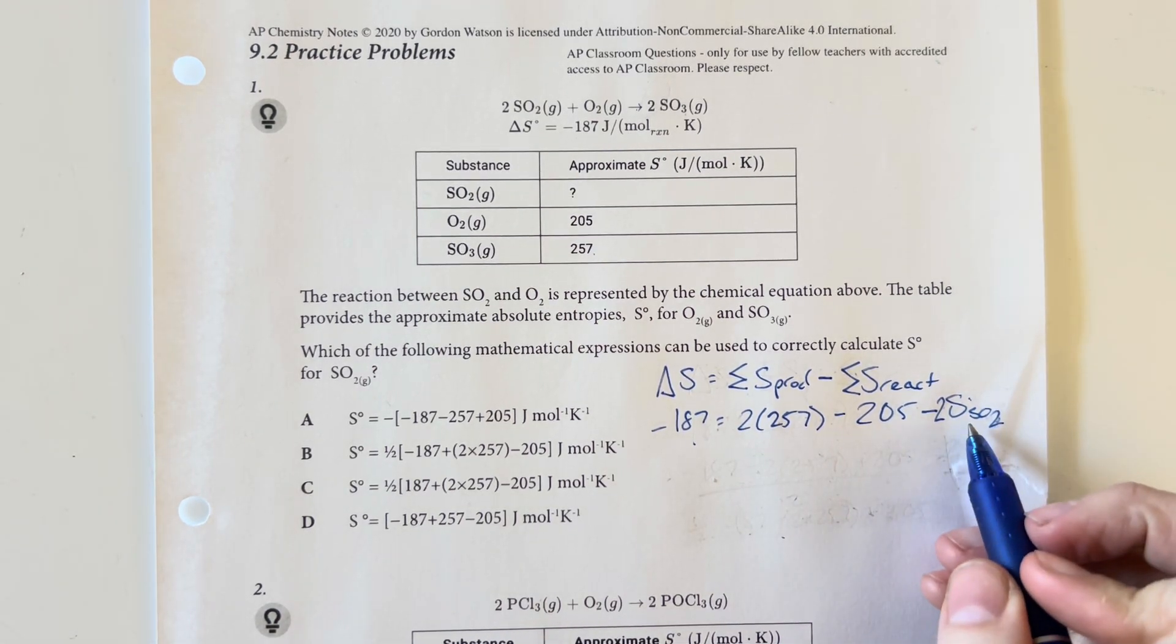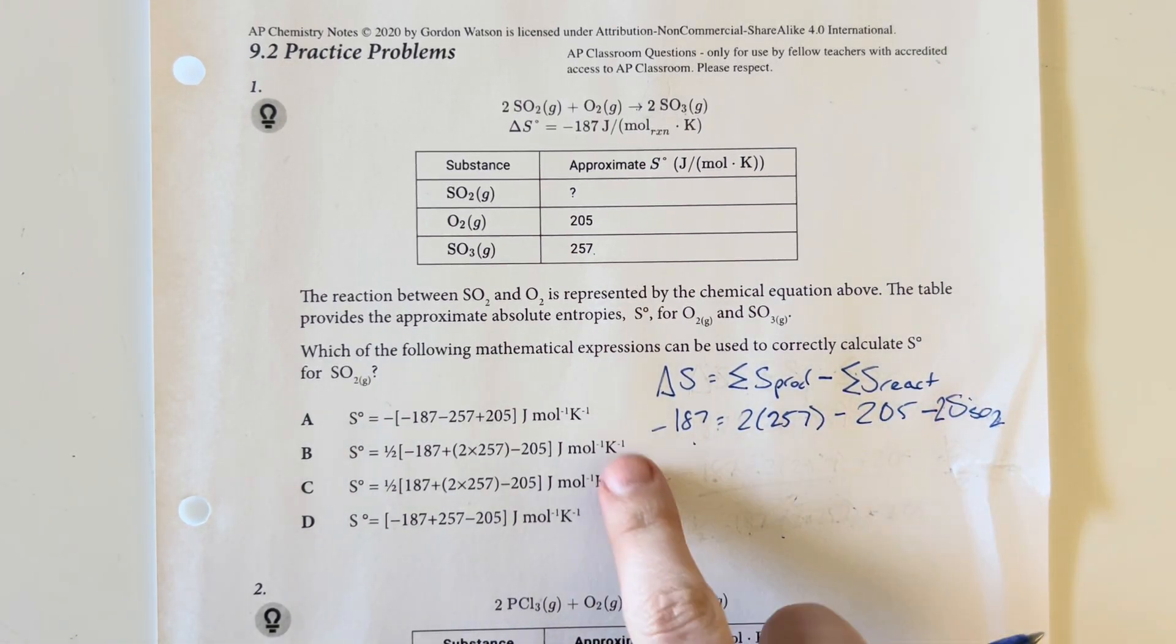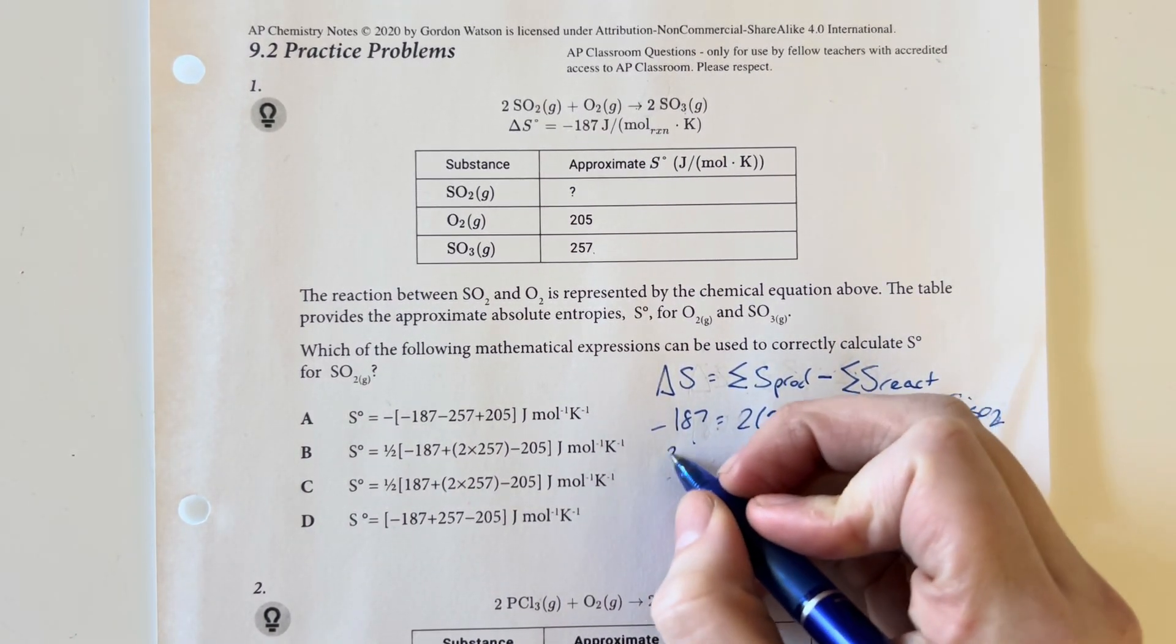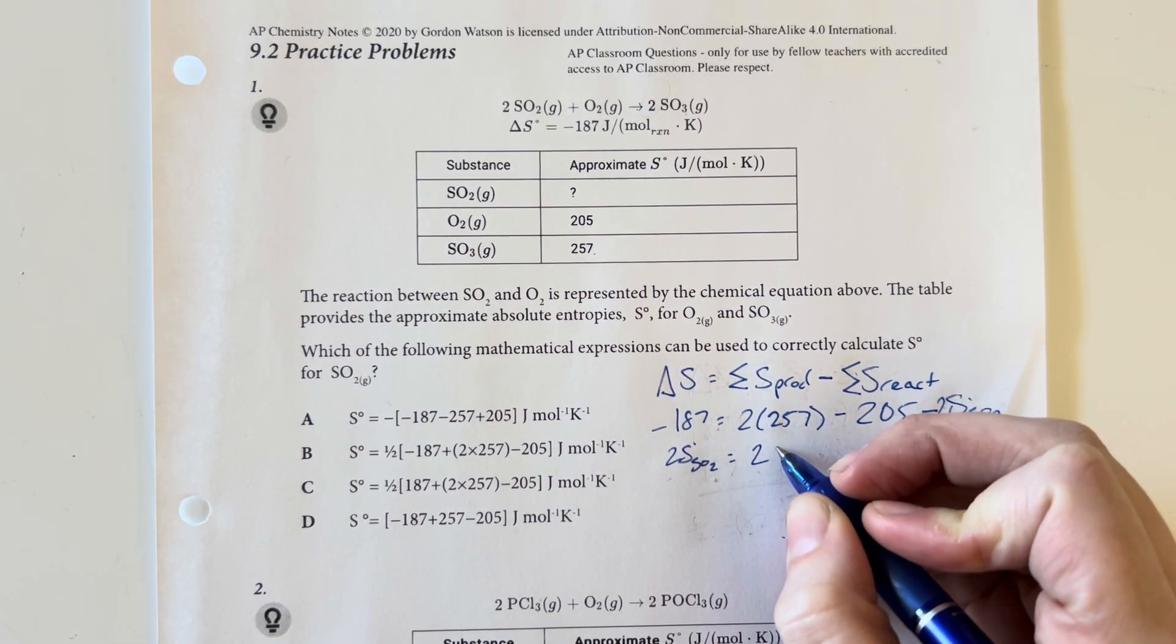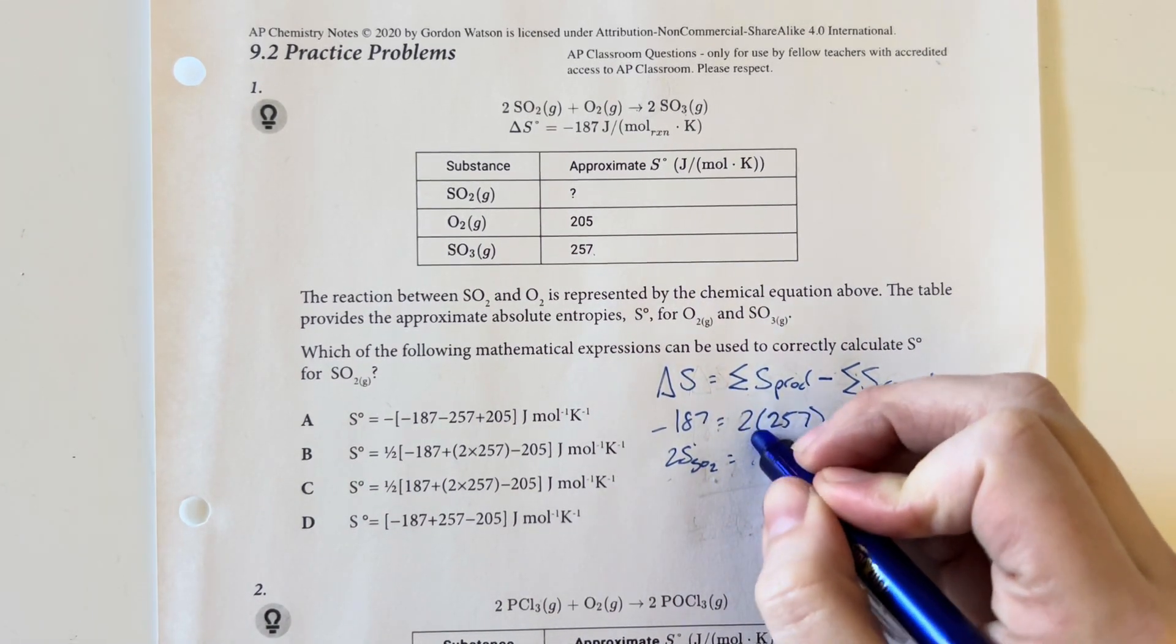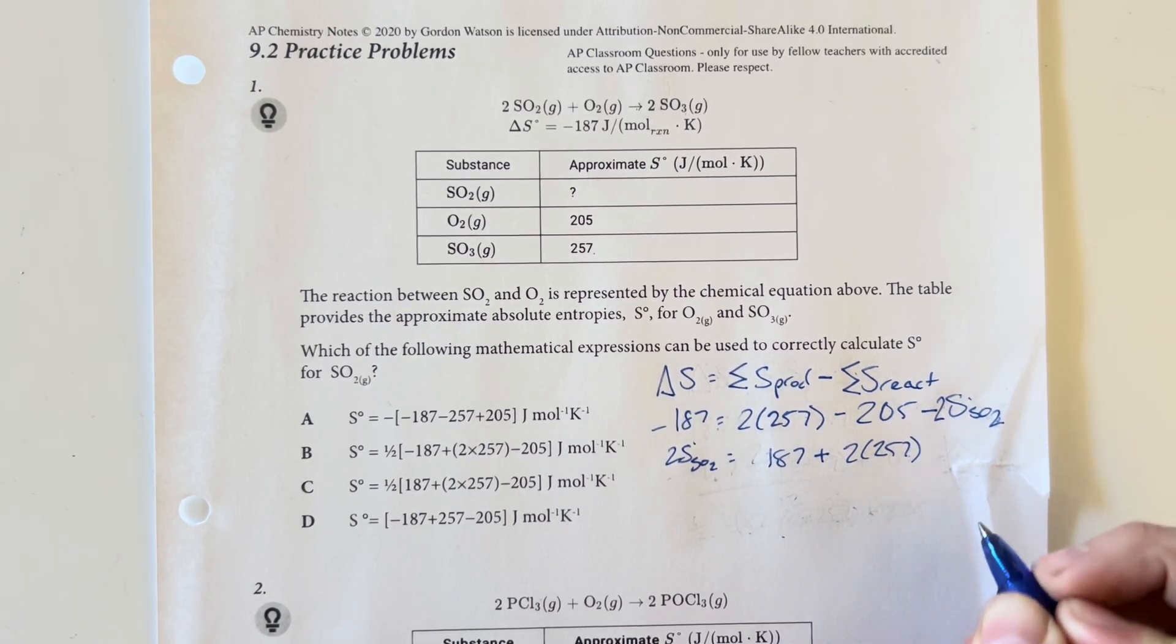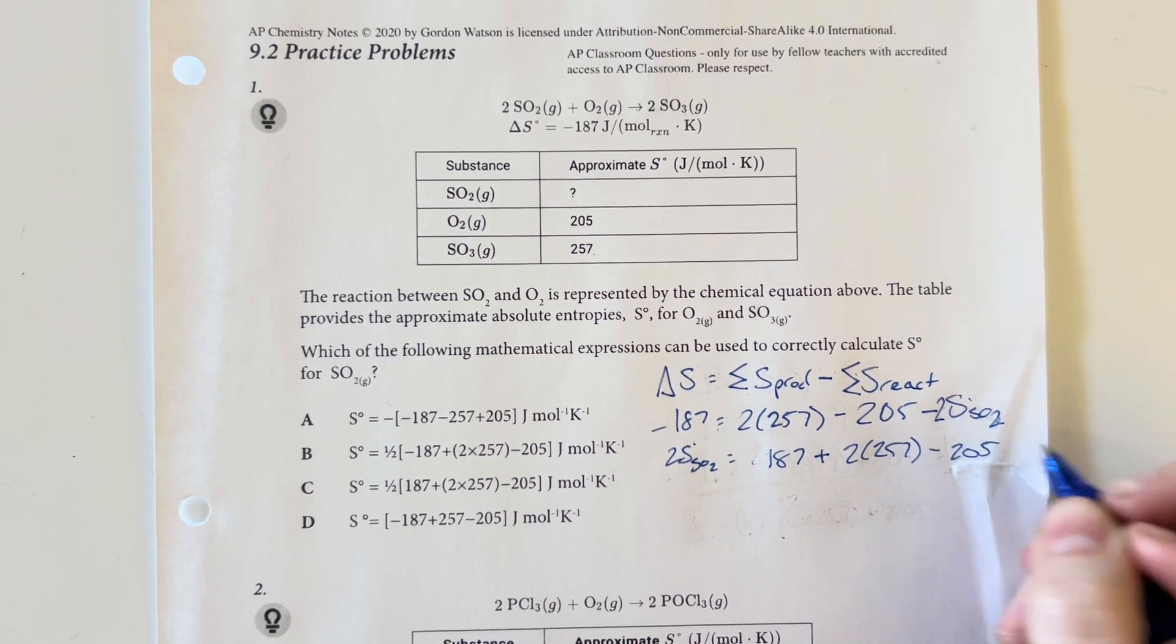Now, since this is negative, we're going to flip this. We're going to be moving the sulfur dioxide value over here and the 187 over here. So 2S for the SO2 is equal to positive 187 plus 2 times 257 and then minus 205.